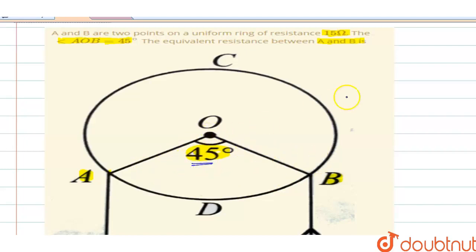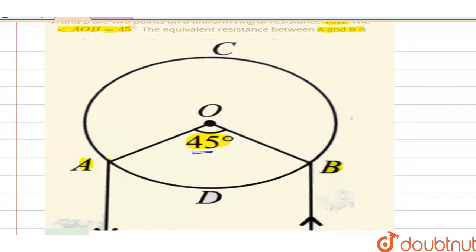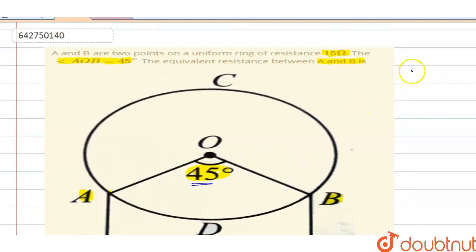For 360 degrees, the resistance is 15 ohms. So for 45 degrees, how much resistance do we have? First, let's find the resistance for one degree. For one degree, it will be 15 divided by 360.